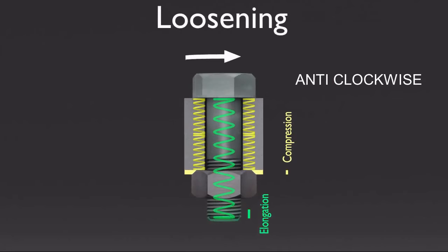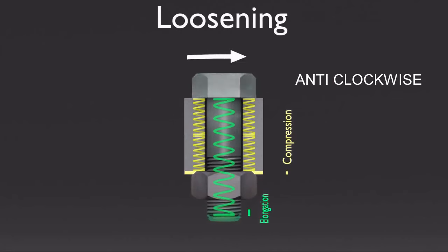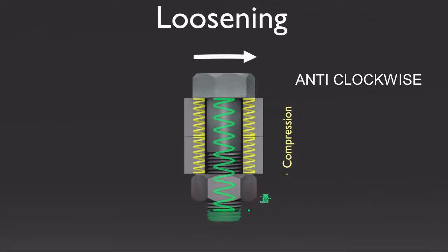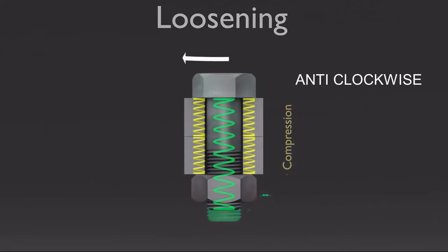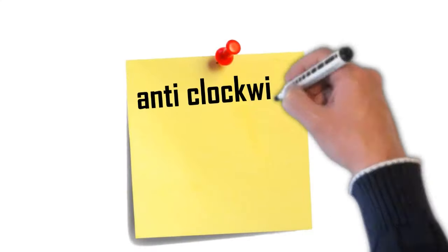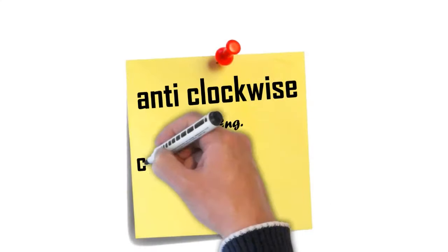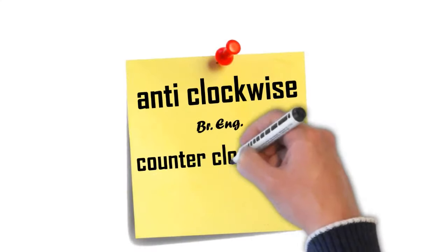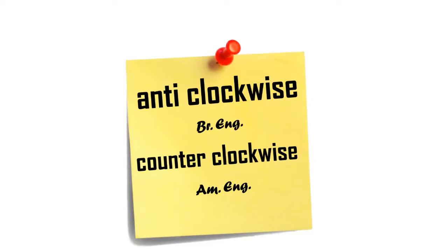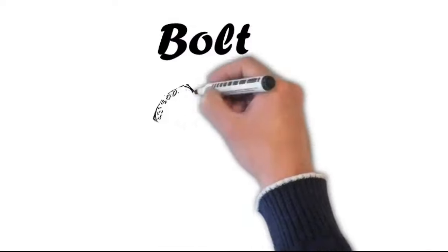Or counterclockwise — anticlockwise is British English and counterclockwise is American English. So that's the vocabulary for a bolt.